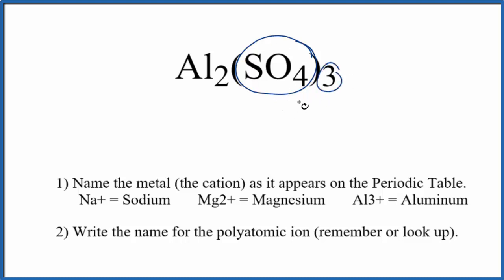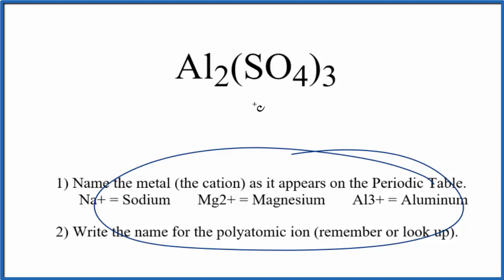We have three of these sulfate ions. These three sulfate ions are bonded to these two aluminum atoms. Aluminum is a metal. So we have this metal and this polyatomic ion, a group of nonmetals. This is an ionic compound, so we're going to use these rules to name Al2(SO4)3.